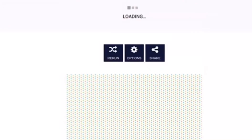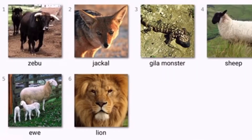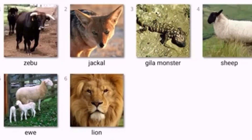I'm just going to call that one bull because I don't bother with the real names. Next up: jackal, gila monster, sheep and ewe — what's the difference between a male and female sheep? I'll just count that as one — and a lion. Without further ado, let's get into the drawing. This will be the last drawing of the day.